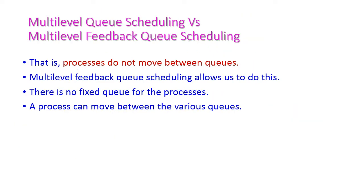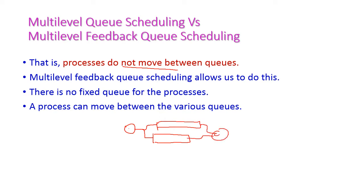The drawback of multi-level queue scheduling is that processes do not move between the queues. Once a new process is created, it is fixed to a particular queue and cannot move to another queue for CPU execution. Once the process is created, it is immediately fixed to a particular queue and should be executed only within that queue — it is not allowed to move to any other queue.